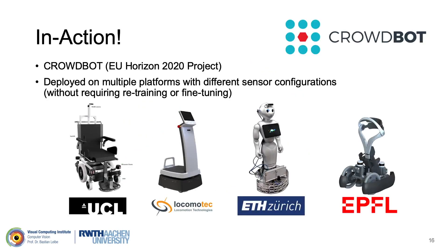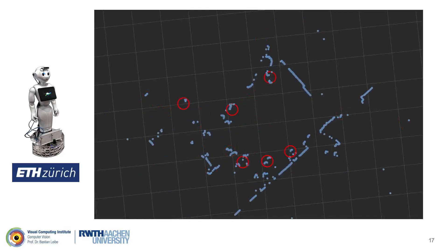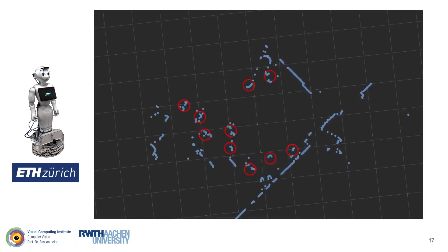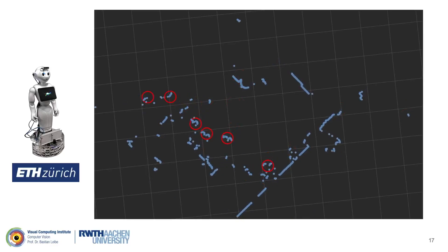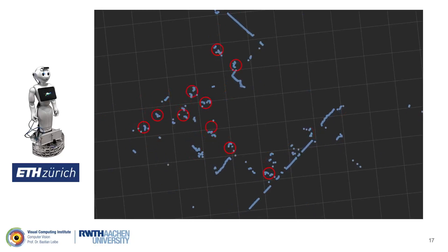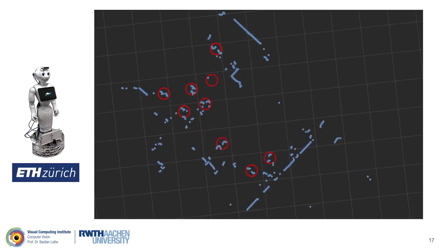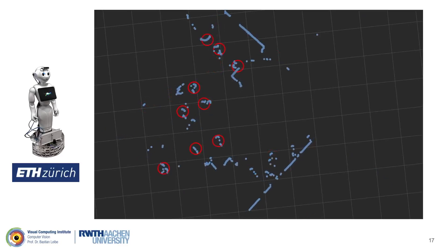DRSPAN generalizes well to different LiDAR models and environments. Within the EU project Crowdbot, we have deployed DRSPAN on multiple platforms with different sensor configurations without requiring retraining or fine-tuning. Here is a video showing DRSPAN running on the augmented PEPA robot from ETH. The robot uses a different LiDAR from the training dataset and the network was not fine-tuned. The robot is situated in a semi-crowded environment, and each grid cell in the visualization has a side length of 1 meter. The pretrained DRSPAN generalizes well to this new sensor configuration and detects people with few false positives even in this challenging scenario.